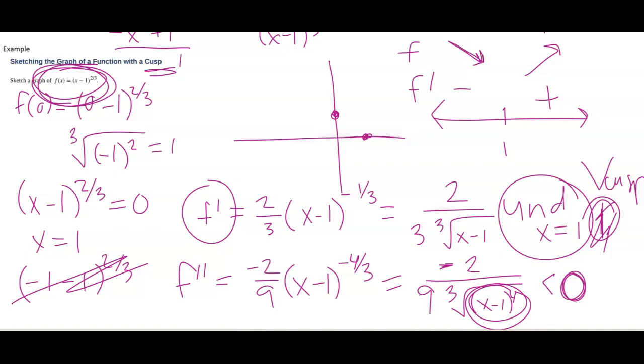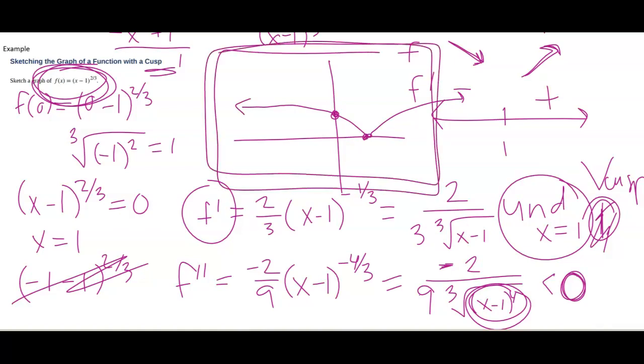Always concave down that goes from decreasing to increasing. So decreasing concave down to this point. Increasing concave down looks like this, like a square root graph. And so this is what that graph looks like with the cusp there.